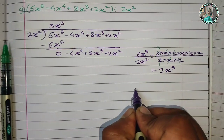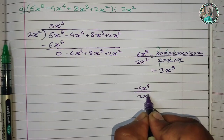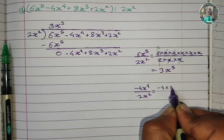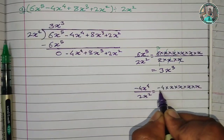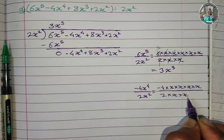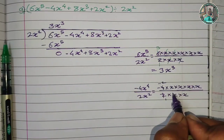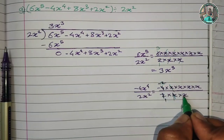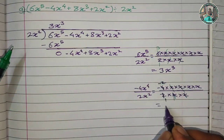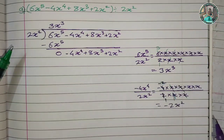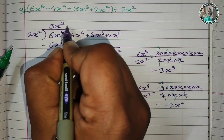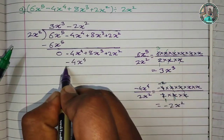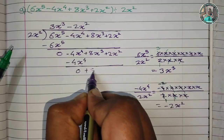Now the second term: minus 4x raised to 4 divided by 2x squared. This gives minus 4 into 2x into x into x into x divided by 2 into x into x. x cut x cut x cut x cut. The answer is minus 2x squared. So minus 4x raised to 4 gives quotient term minus 2x squared, remainder 0. Then plus 8x cubed and plus 2x squared remain.